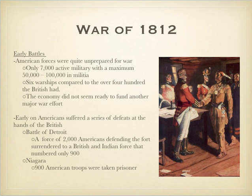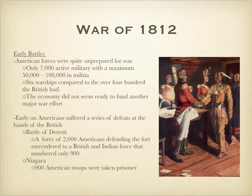We lose a number of early battles. At the Battle of Fort Niagara, 900 American troops are taken prisoner. The Battle of Detroit is really an insult to America. Detroit had become an American fort following the British evacuation after the Revolution and was garrisoned by 2,000 Americans. A British and Indian force numbering less than 900 was able to force the Americans to surrender without ever firing a shot — they spread themselves out, threw war cries, and made the Americans think they had three to five times the soldiers they actually had.